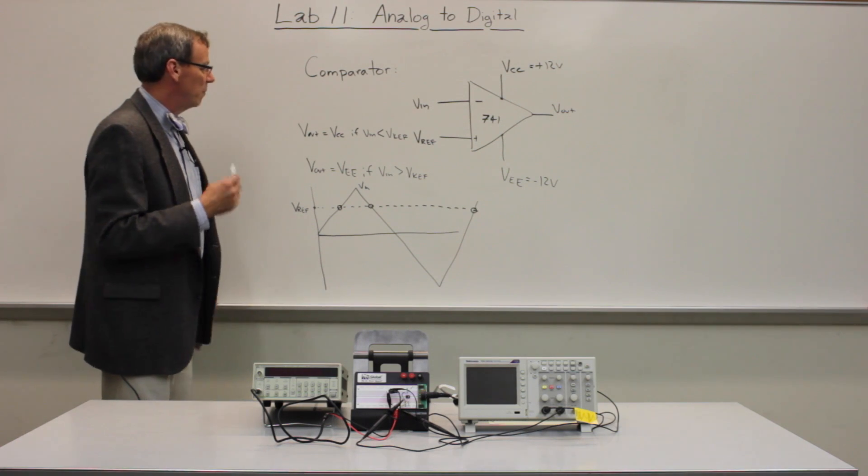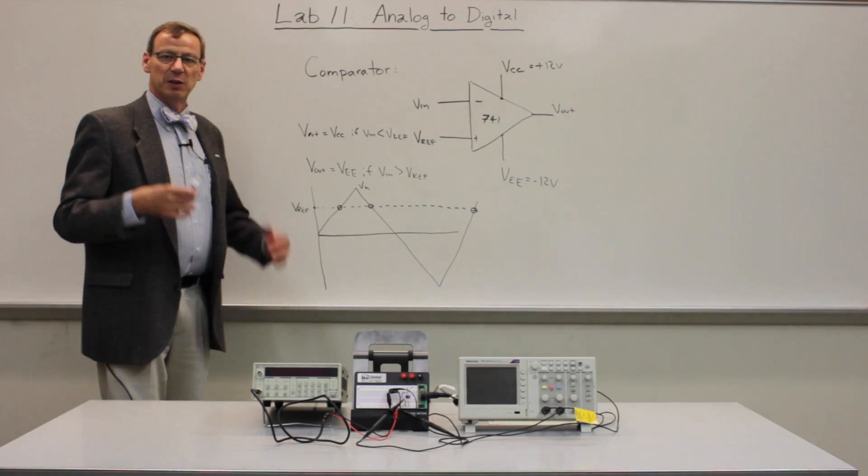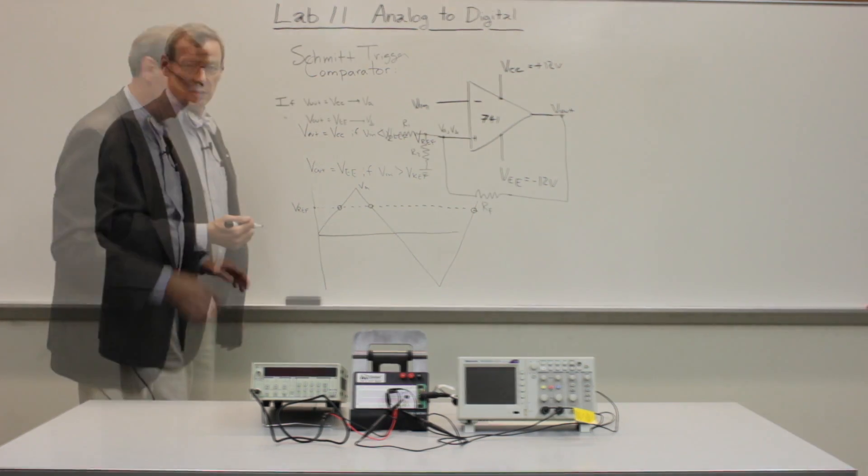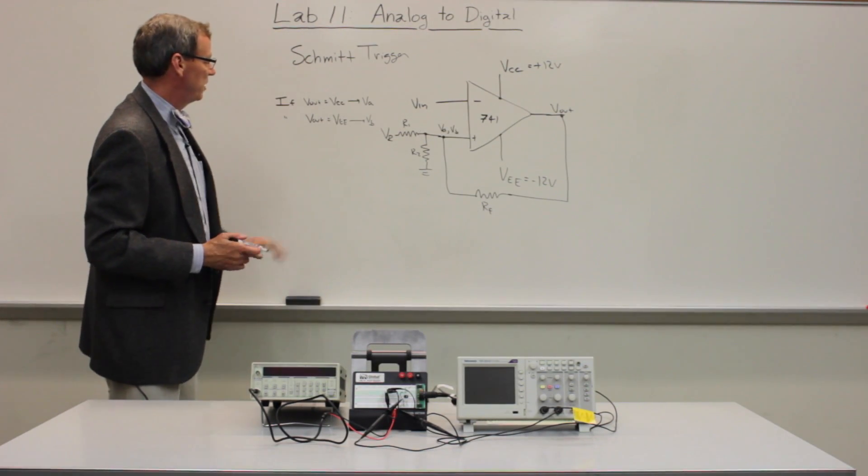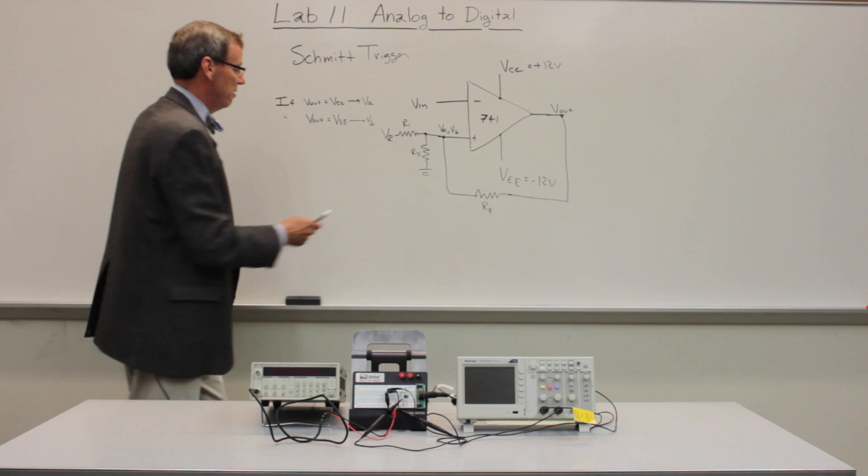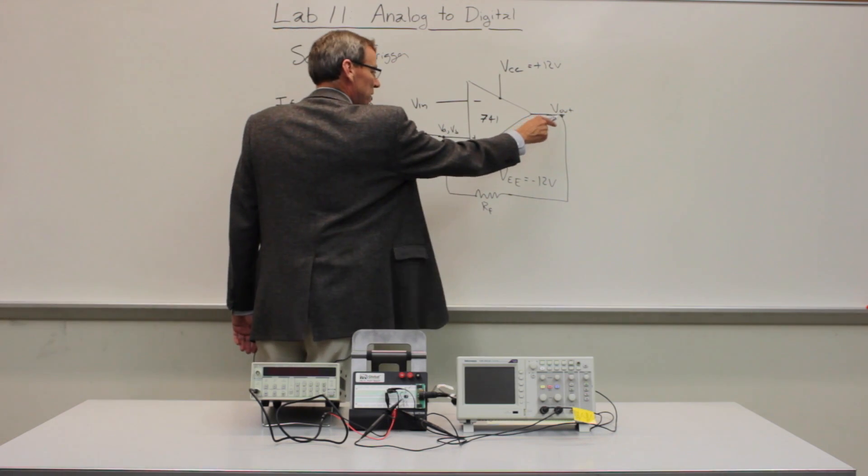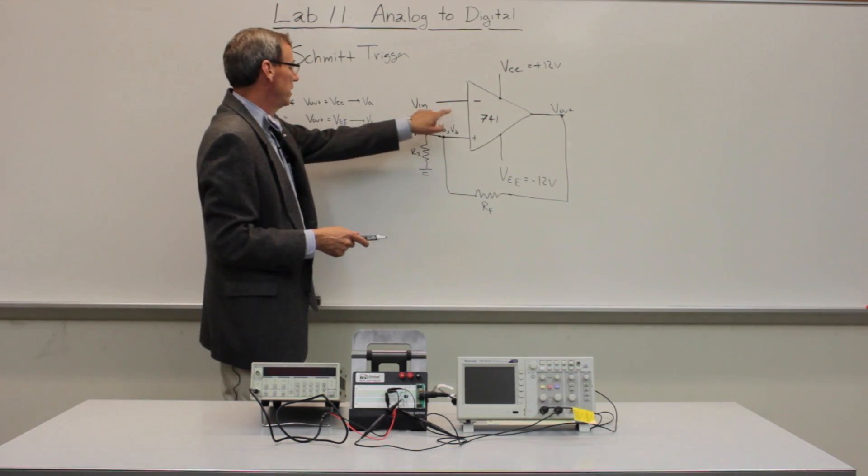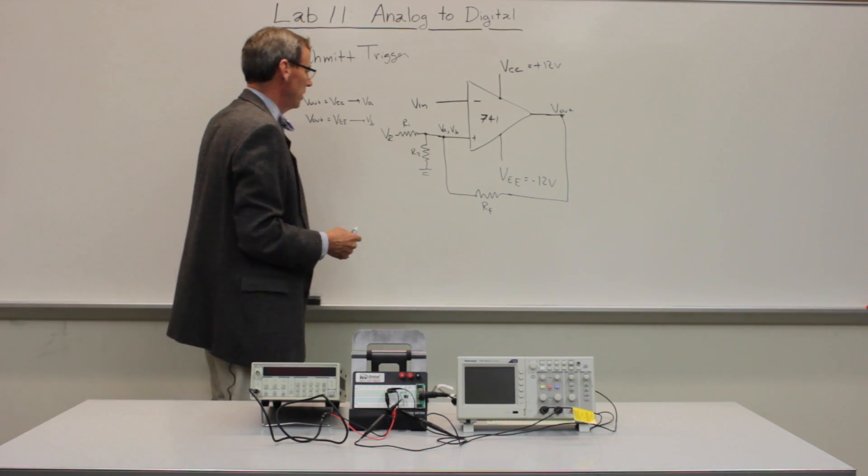The next thing we're going to do is we're going to modify this circuit slightly to build a so-called Schmidt trigger. So let's take a look at that. The Schmidt trigger here is a very slight modification on the comparator. The main thing is we have a positive feedback resistor coming from the output voltage into the non-inverting input.